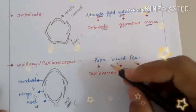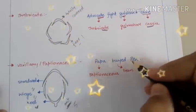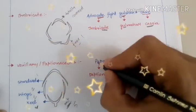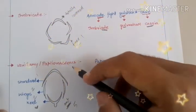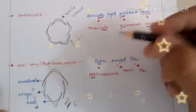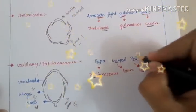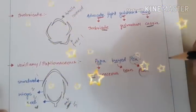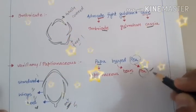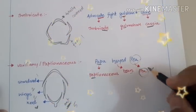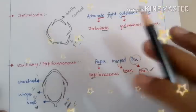The simple trick to memorize the examples of Vexillary Estivation is 'Papa Bide P.' Papa means Papilionaceous — the kind of Estivation we are learning. Bide means Bean, and P means Pea. So the two examples are Bean and Pea, which are very important from an examination point of view.